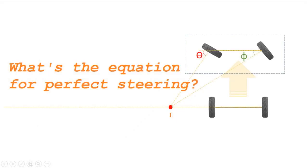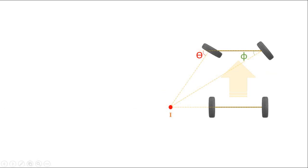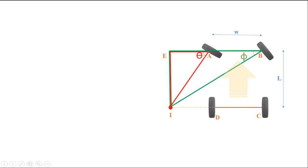Let's derive the perfect steering equation. Add two lines to our diagram to form two right-angled triangles and name all the points as A, B, C, D, E, and the instantaneous center I. Let L be the wheelbase and W the distance between the pivots of front axles.